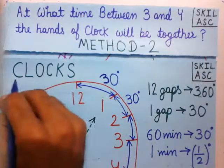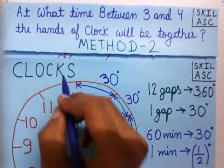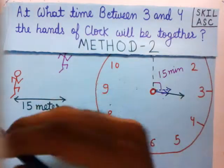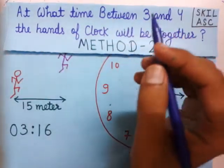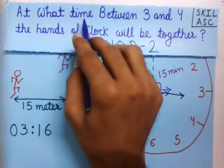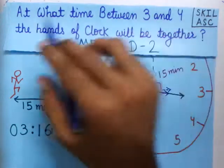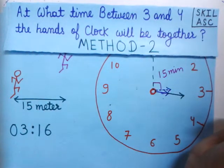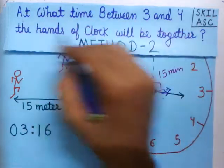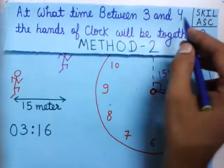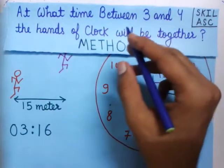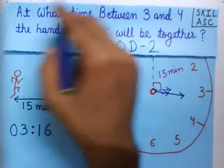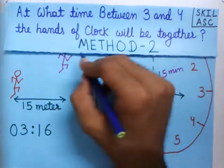Welcome to learn about clocks. We are going to learn about a very important question related to clocks: at what time between 3 and 4 will the hands of the clock be together? We had seen this type of example in previous videos solved by method 1, and right now I'm going to solve this by method 2.